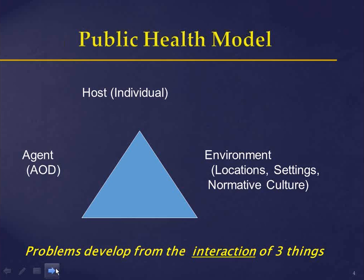In this model, we talk about the interaction of three pieces: the agent — the substance itself, alcohol, marijuana, OxyContin — the host being the individual, and the environment being where the individual and the agent come together. When thinking about environments, we're looking at places of high risk in communities where substance use may be occurring. That's why we focus on home parties, or on the number of alcohol outlets downtown — what can we do to reduce risk in specific environments.